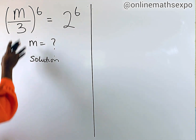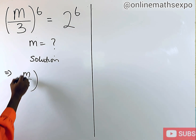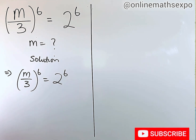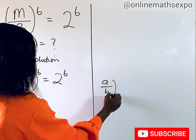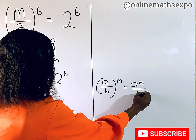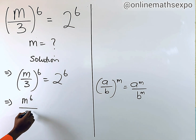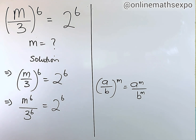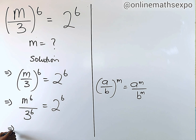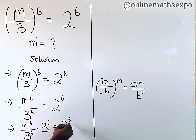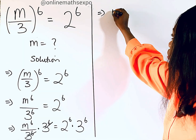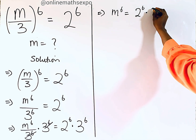To begin the full solution, we have (m/3)^6 = 2^6. Remember, for (a/b)^m, this equals a^m / b^m. So we can write this as m^6 / 3^6 = 2^6. Next, we multiply both sides by 3^6 to clear the fraction. The 3^6 terms cancel, leaving us with m^6 = 2^6 × 3^6.